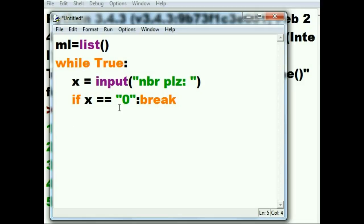Now if he doesn't key in a zero, what should I do? Well then ml, I want you to append into your silly self whatever is in x. Oh wait a minute, first convert x into data of type float.